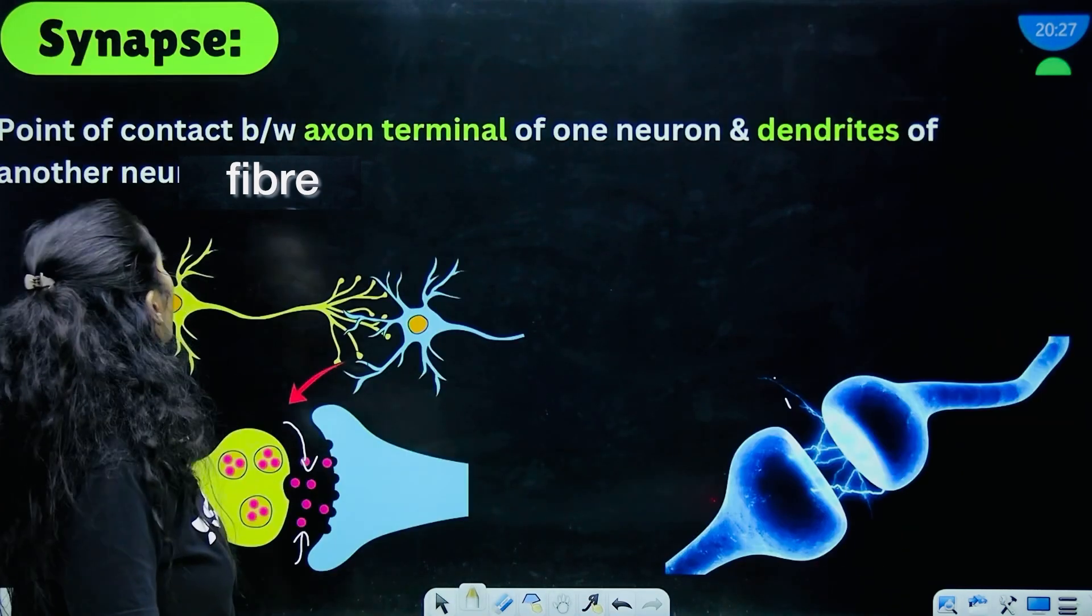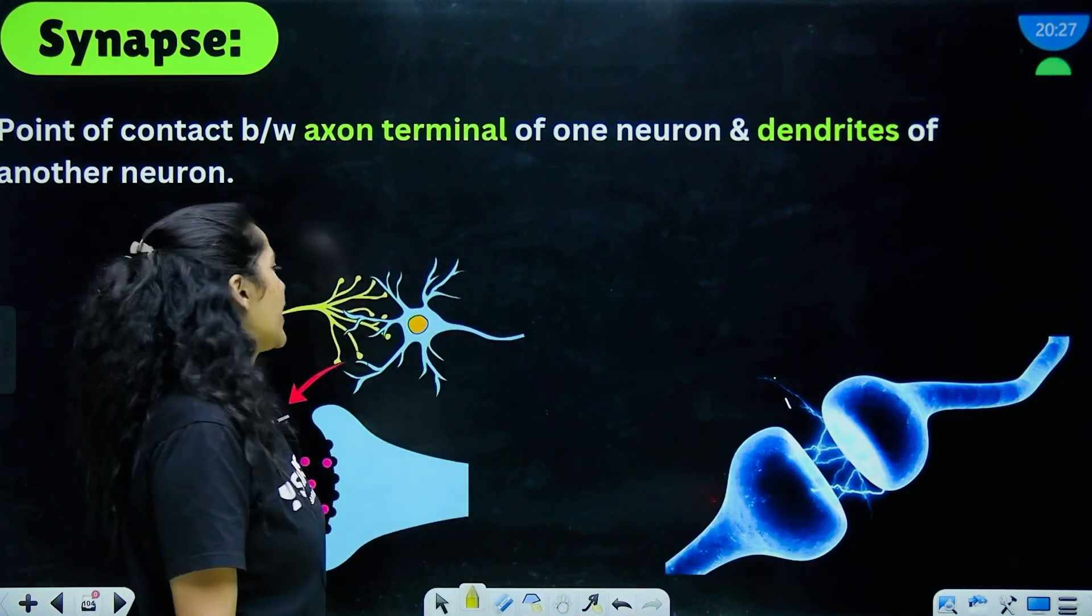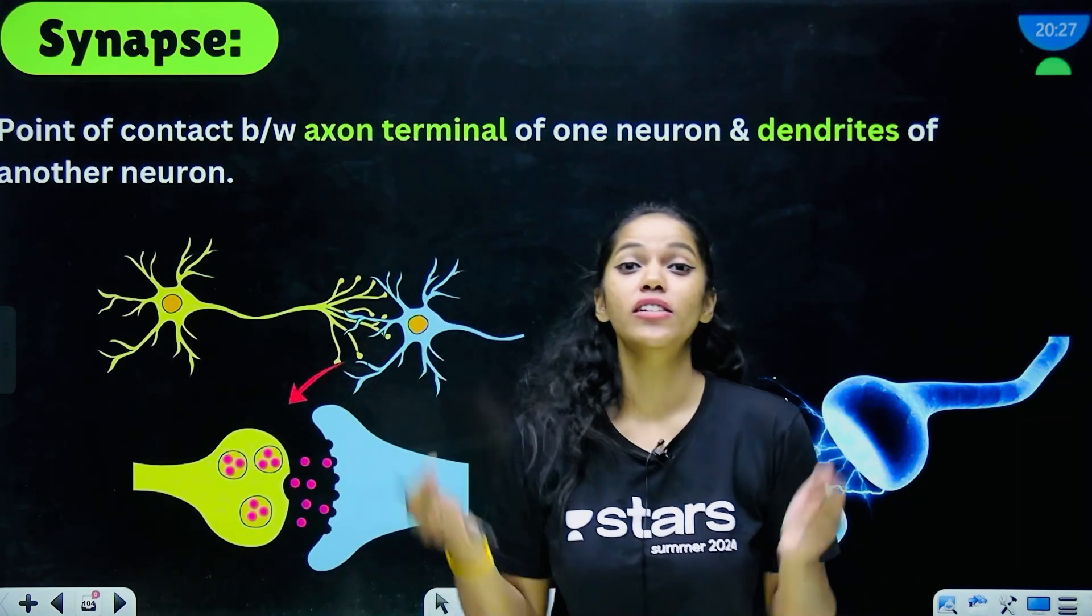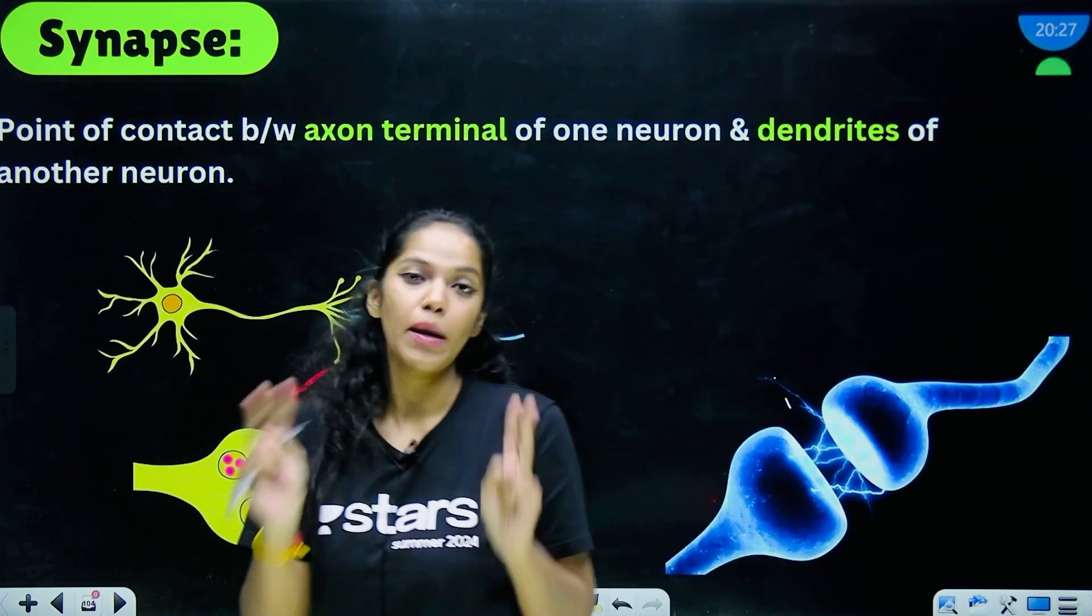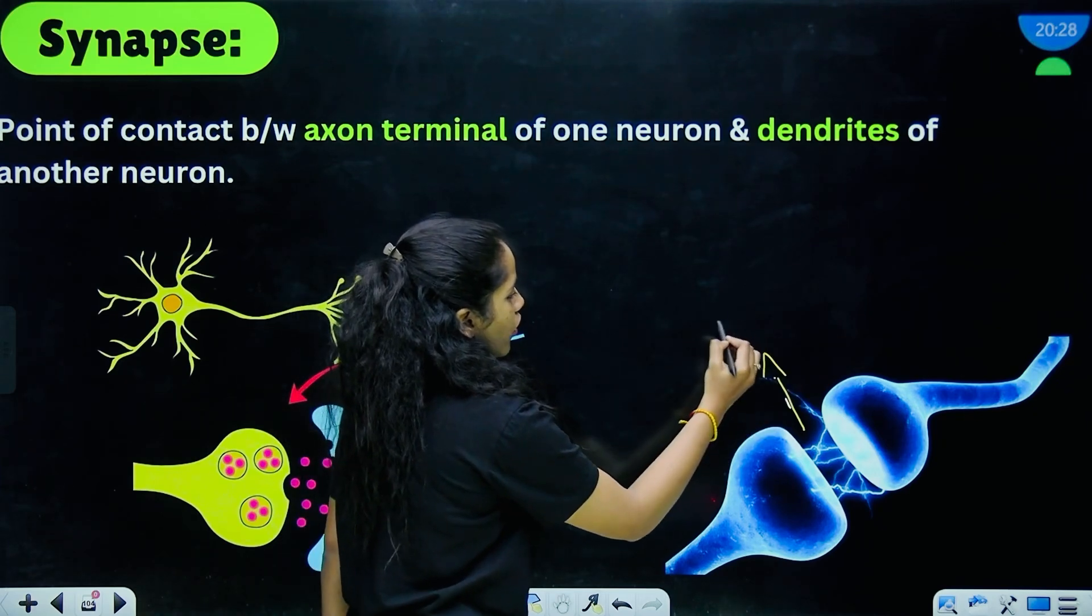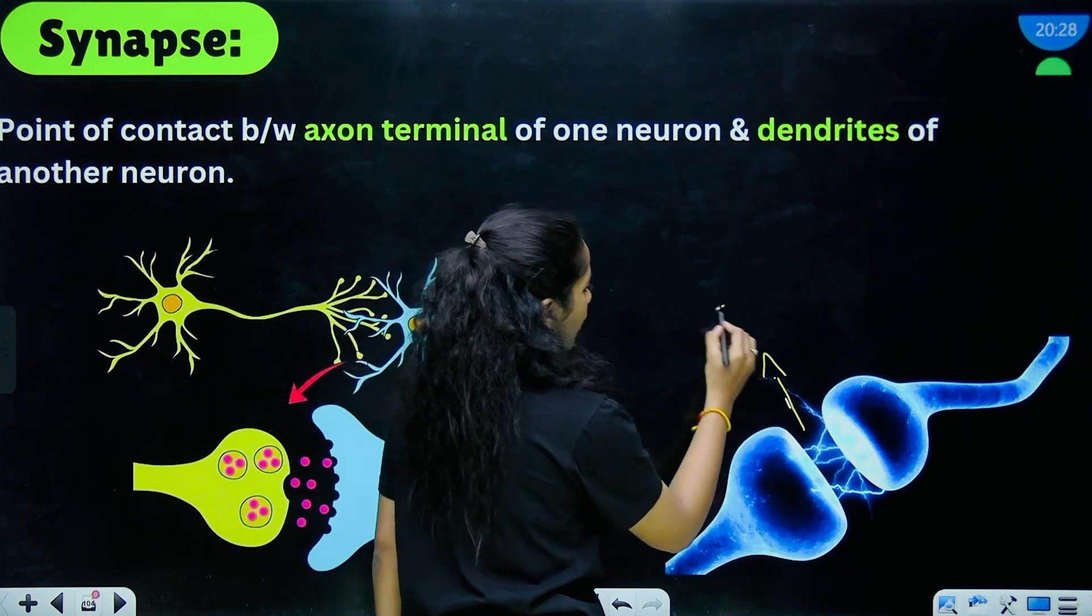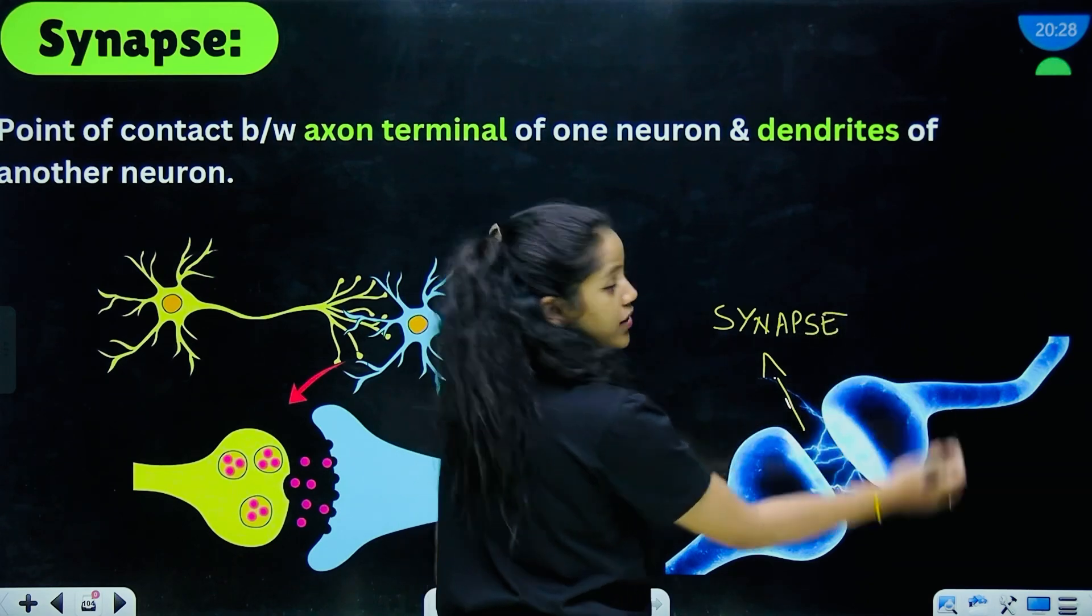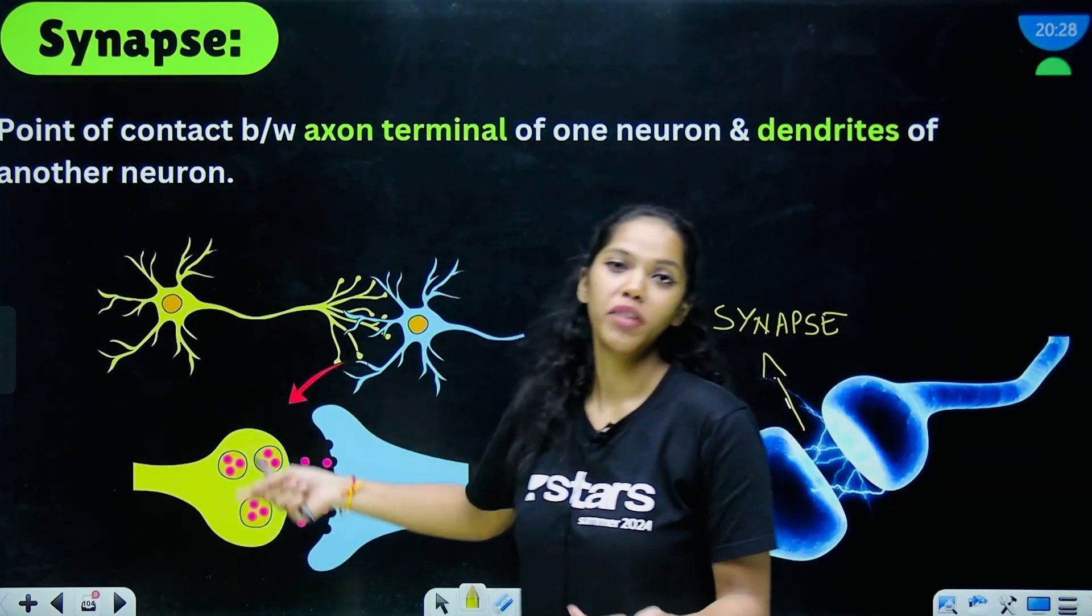So again moving on—synapse. So you know synapse, I am pretty sure you all already know what synapse is. Synapse is nothing but the point of contact between the axon terminals of one neuron and the dendrites of another neuron. Mind you, these are two separate neurons. Surprisingly guys, for the neural impulse to get transferred they don't have to come in contact, the neural impulse jumps. Cool, right?